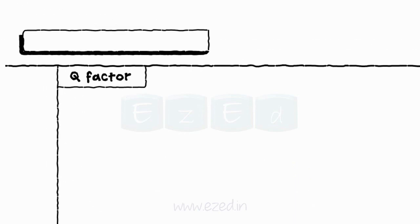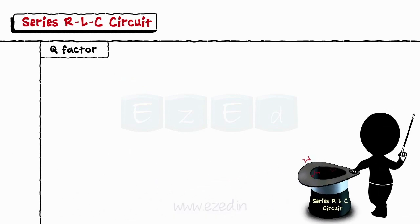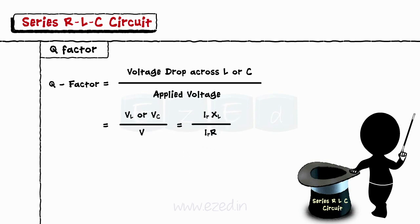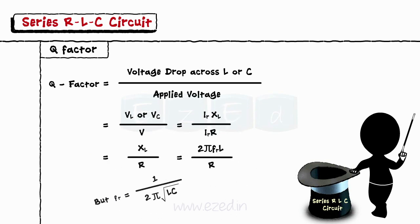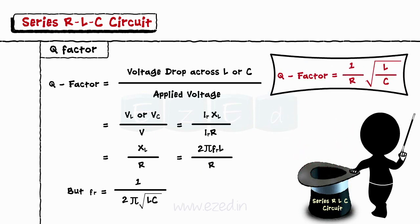The Q factor, or quality factor, of the series RLC circuit is defined as the ratio of the voltage drop across the inductor or the capacitor to the applied voltage. Substituting the values of the respective voltage drops, we get Q equals (1 upon R) into square root of (L upon C).